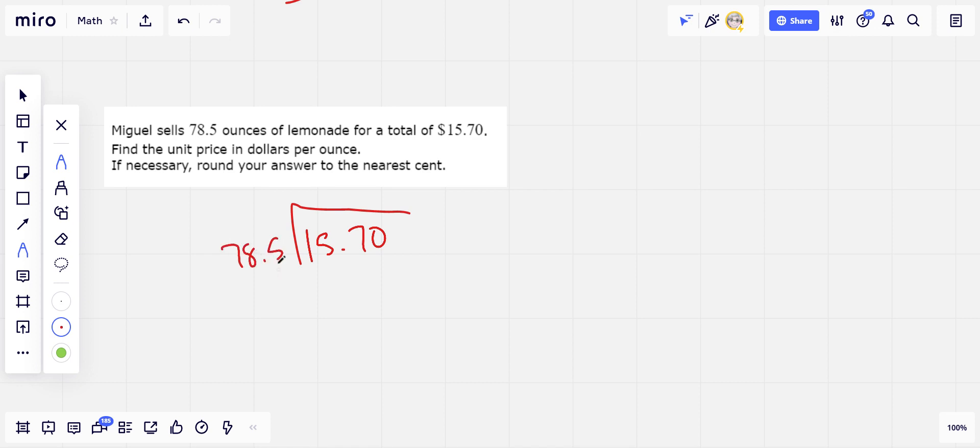Now remember, when you have a decimal point in your divisor here, the thing you're dividing by, you move it, and then you move that as well. I'm going to give myself a little more room. So this is really 7.85 dividing into 157.0.